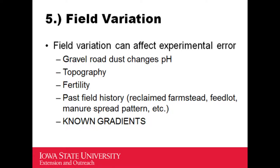With GPS guidance systems you can very easily zigzag through the field to randomize, and it doesn't take any more time — might actually be quicker because you may not have to change out planter boxes. Field variation gets caught up in experimental error all the time, but if experimental error is too high you can have a 10-bushel yield difference in corn or beans and it may not be statistically different because of too much variability. We need to account for it — gravel roads, prevailing winds pushing limestone dust, topography, soil fertility, past field history.